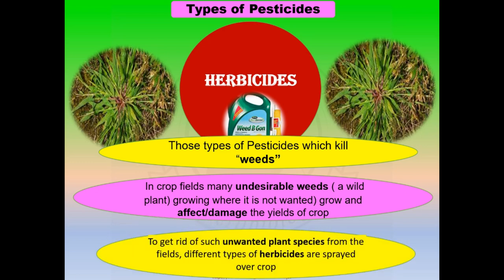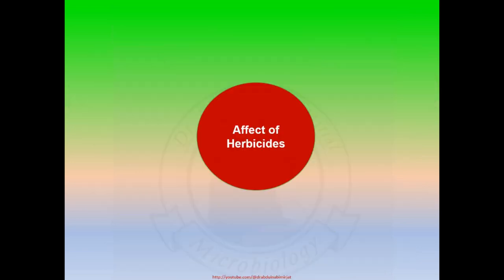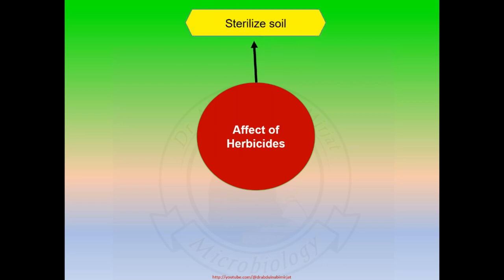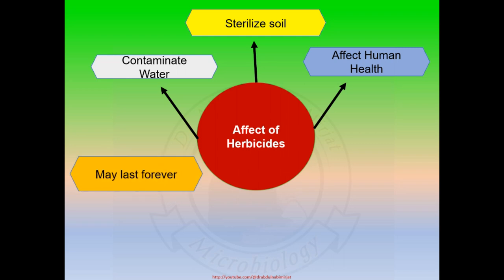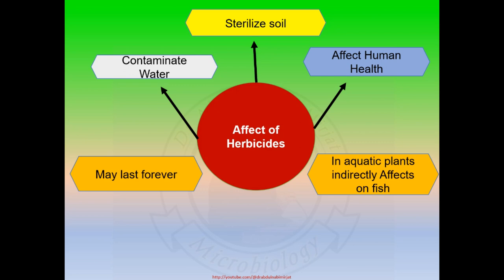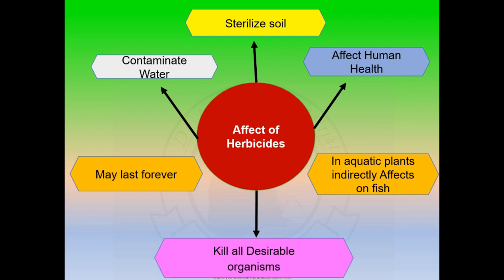To get rid of such unwanted plant species from the fields, different types of herbicides are spread over crops in agriculture. Herbicides may have both positive and negative effects. Exposure to herbicides may slice soil and contaminate water. Herbicides may affect human health and these effects may last forever. Exposure of herbicides in aquatic environments indirectly affects fish. Herbicides may also kill all desirable organisms.